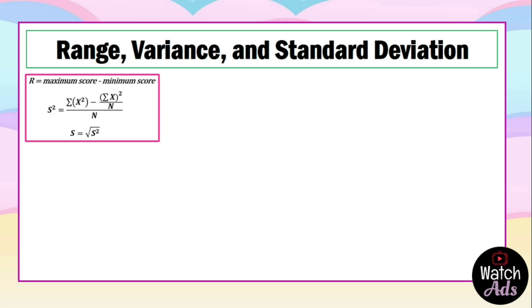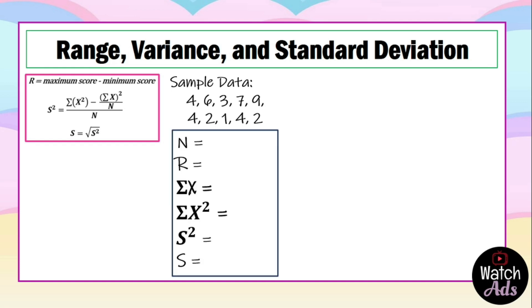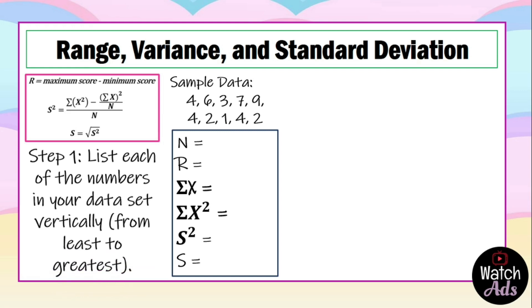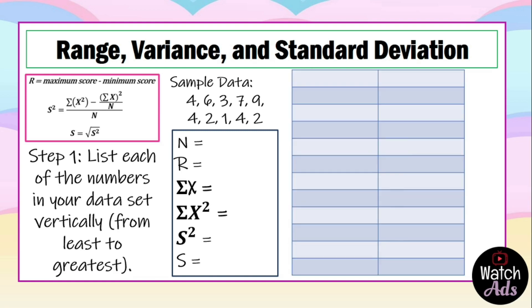Now let's apply our formula. I put a side note on the left to remind us of the formulas for range, variance, and standard deviation. Here is our sample data. The first step is to list each of the numbers in your data set vertically from least to greatest. We write a column on the right side and label them as x. We cross out each number as it is listed so that we do not jumble or forget any numbers.